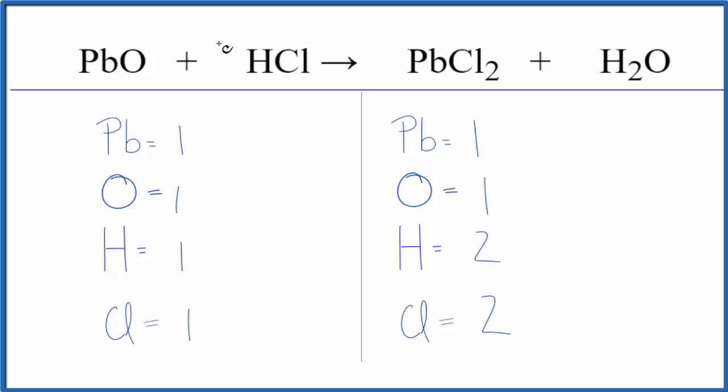Since HCl is together, we put a two here. One times two, that gives us two hydrogen atoms, so those are balanced.